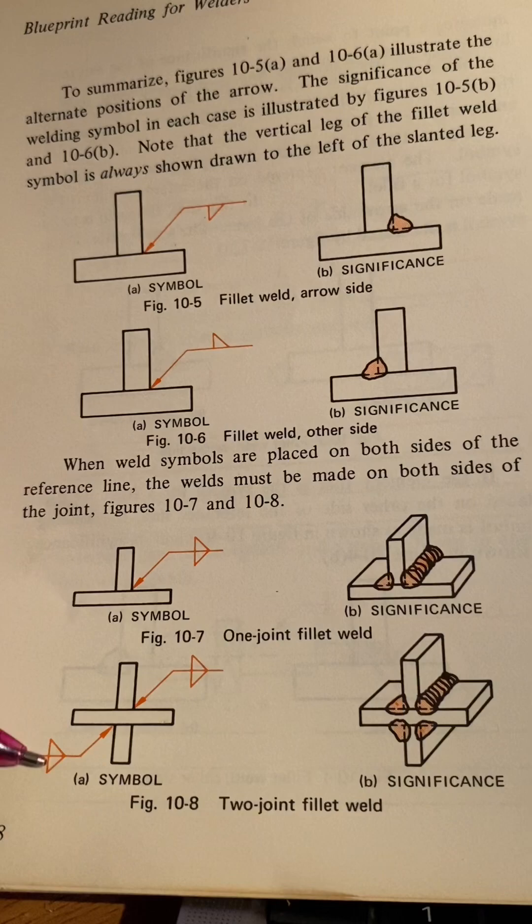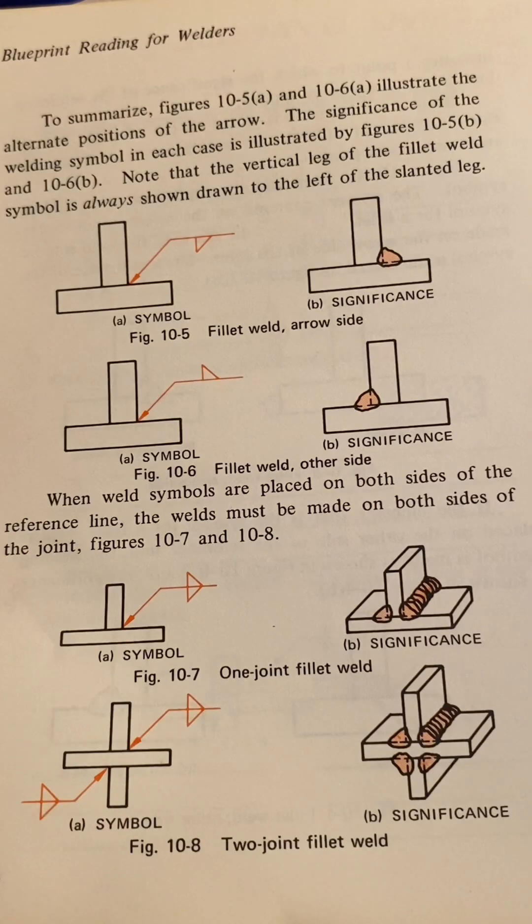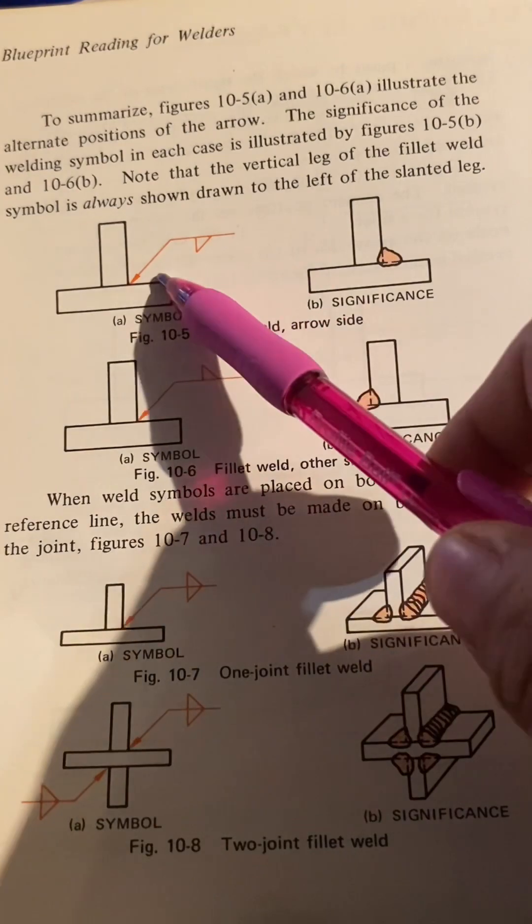Even on this one, look. Figure 10-5, fillet weld, arrow side. Arrow side.